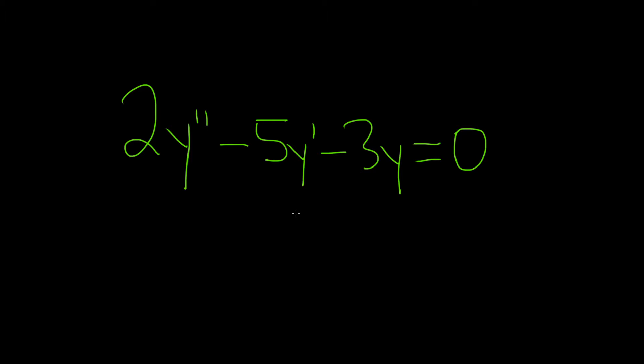So whenever you have a linear differential equation that's equal to 0 with constant coefficients, you can use this method. The first step is to write down what's called the auxiliary or characteristic equation. It's pretty easy to do. You basically just match the derivatives to powers. So it'll be 2, and then it's m, and then it's the second derivative. So I'm going to use the second power.